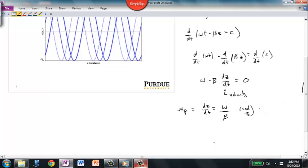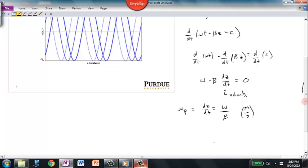So not radians per second, meters per second. Right? Radians per meter divided, radians per second divided by radians per meter gives you meters per second.